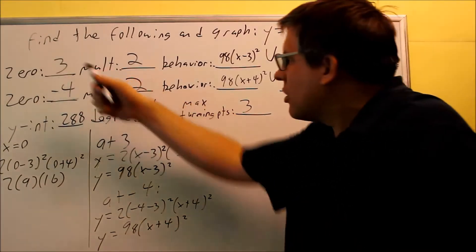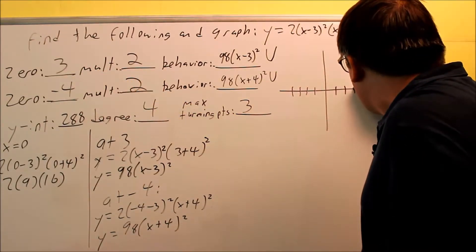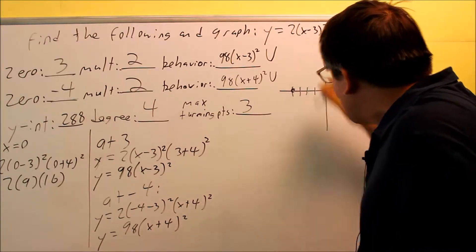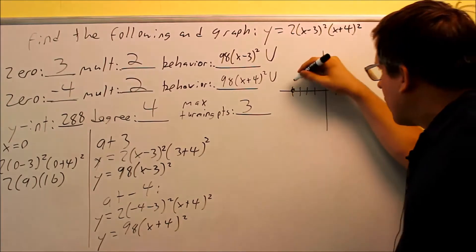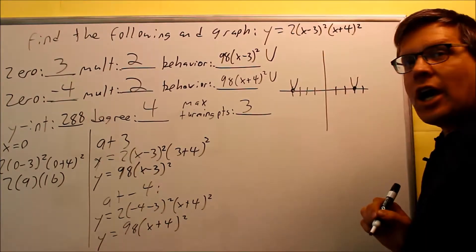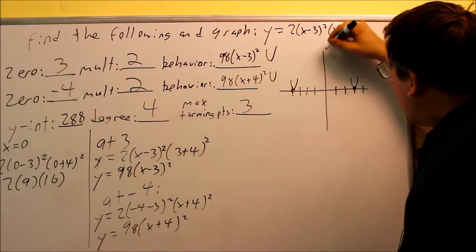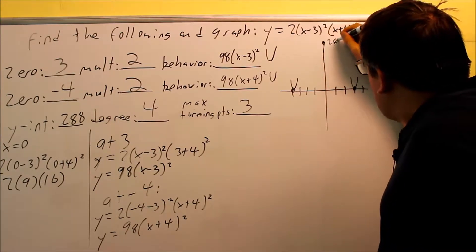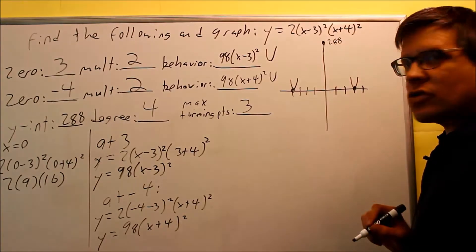So at each of these zeros, at 3, I'm going to make a dot right there. And at negative 4, I'm going to make a dot. So I know that it's going to cross and it's going to look like a u at both these places. Way up here, it's going to be at, this is at 288. That's where the graph is going to cross.